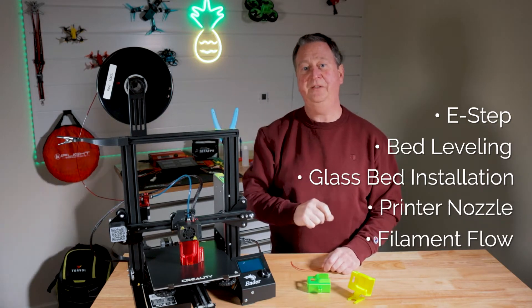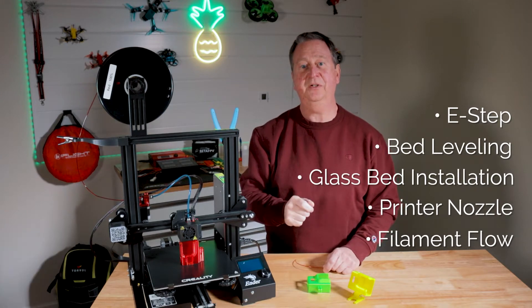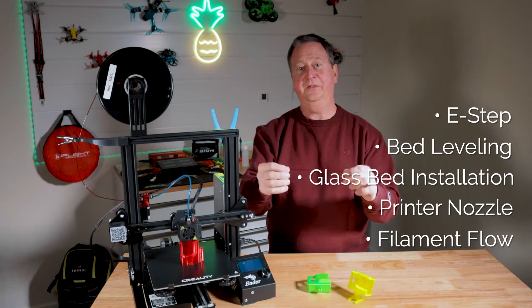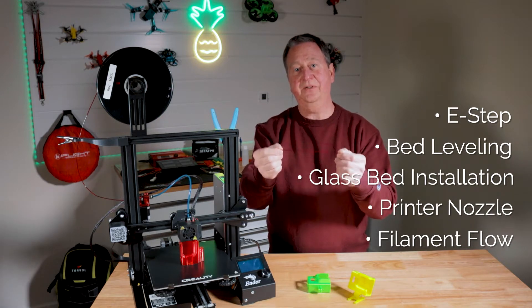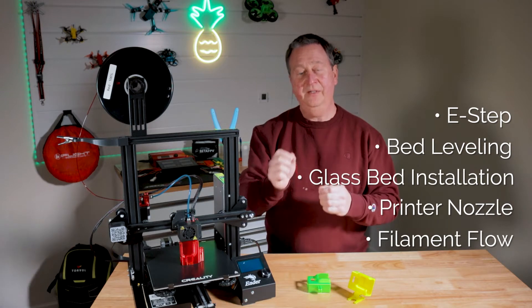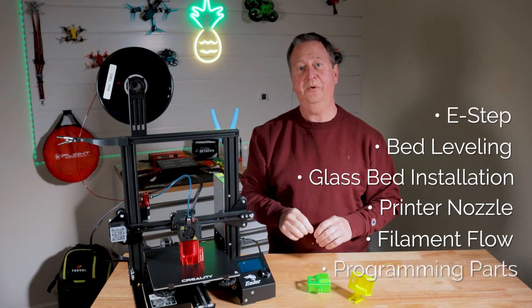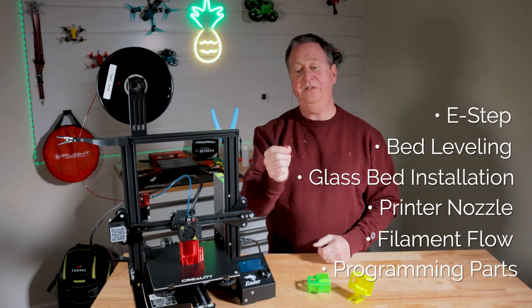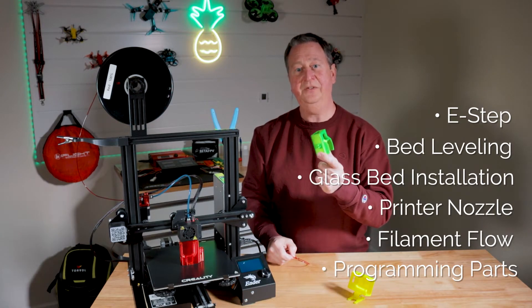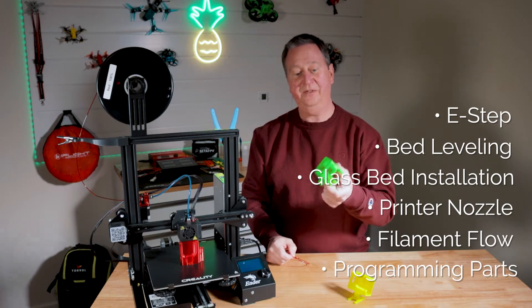When you put a new roll of filament in, you can't just assume that it's going to print correctly. Every piece of filament is not created equally. Sometimes there are larger diameters and smaller diameters, and you have to compensate for that in your programming. The last video is going to cover how to program a part properly in TPU so it turns out like this the first time, and you can go to bed at night and wake up in the morning and have yourself a nice finished part.